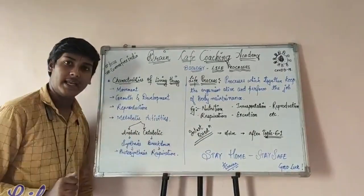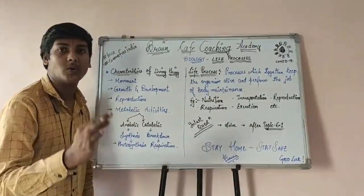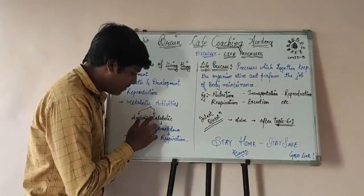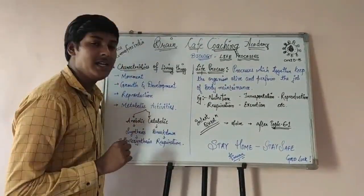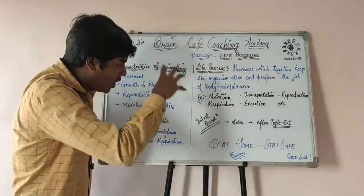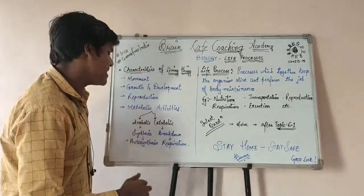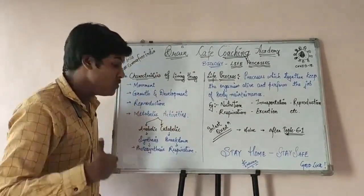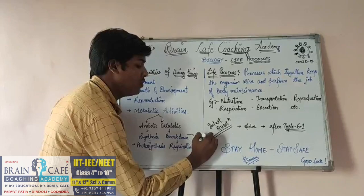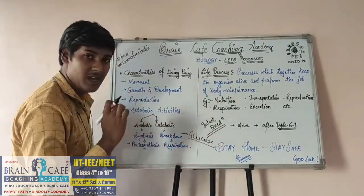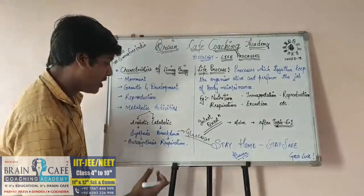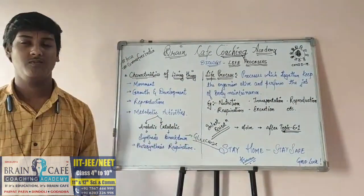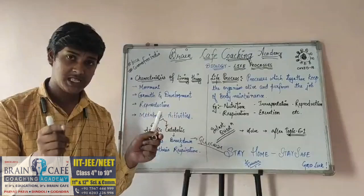What is an example of anabolic activity? Photosynthesis — CO₂ and H₂O combine to produce glucose. Now, what is catabolic activity? Catabolic activity is the breakdown process — the reverse of anabolic activity. So: anabolism plus catabolism equals metabolism. This concept is clear, children. Any doubt, please comment — it is very important. Put your doubts in the comment section and they will be answered as soon as possible.